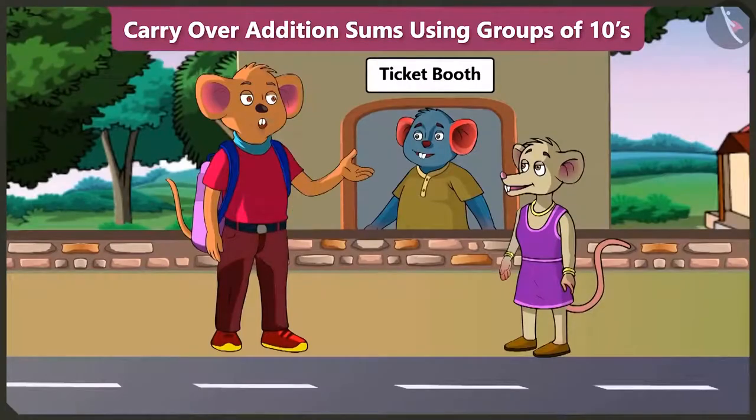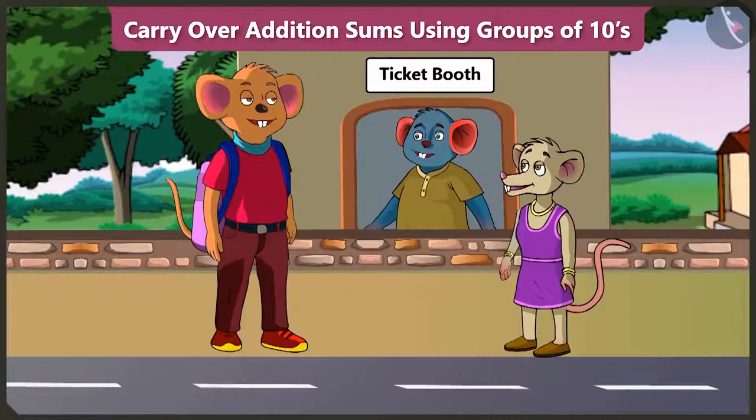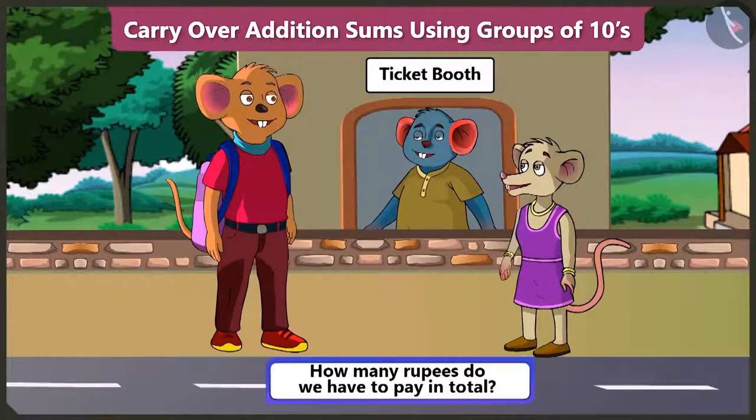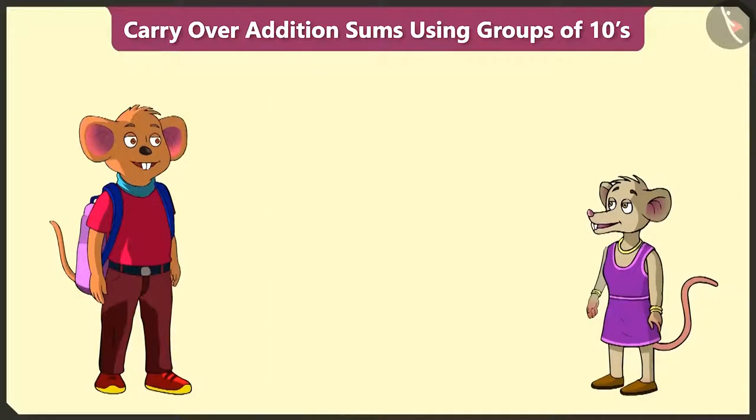Please give us two tickets to the zoo. You are older, so your ticket will be 48 rupees. And for this child, the ticket will be for 24 rupees. So, Choo Choo, how many rupees do we have to pay in total? For this, we have to add 24 to 48.